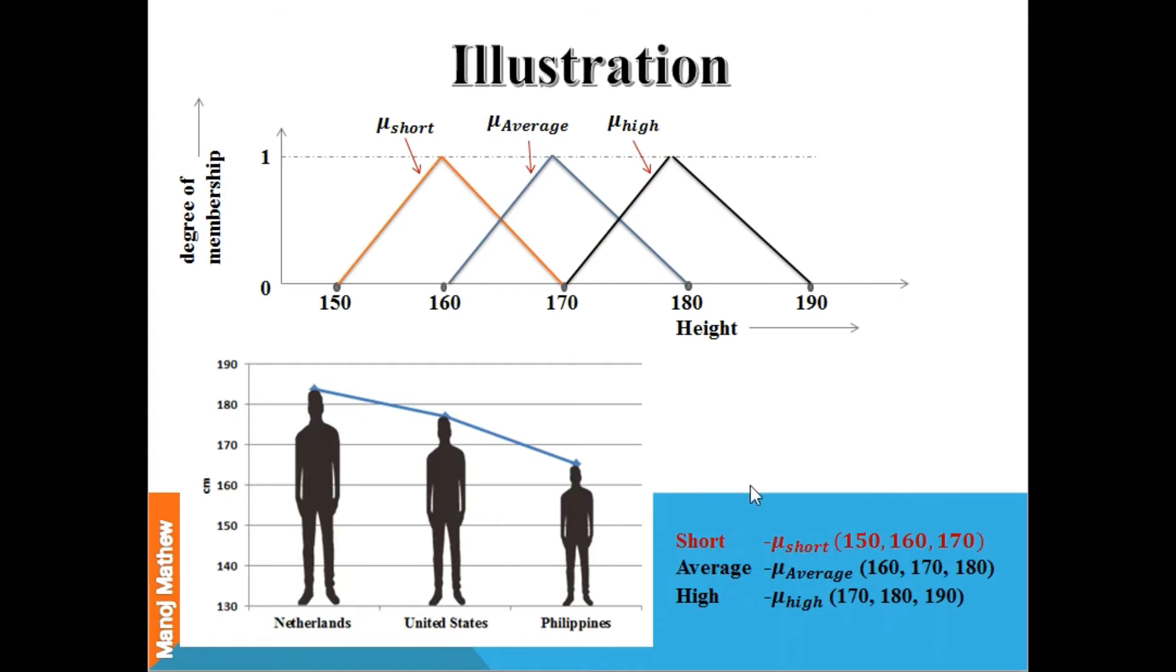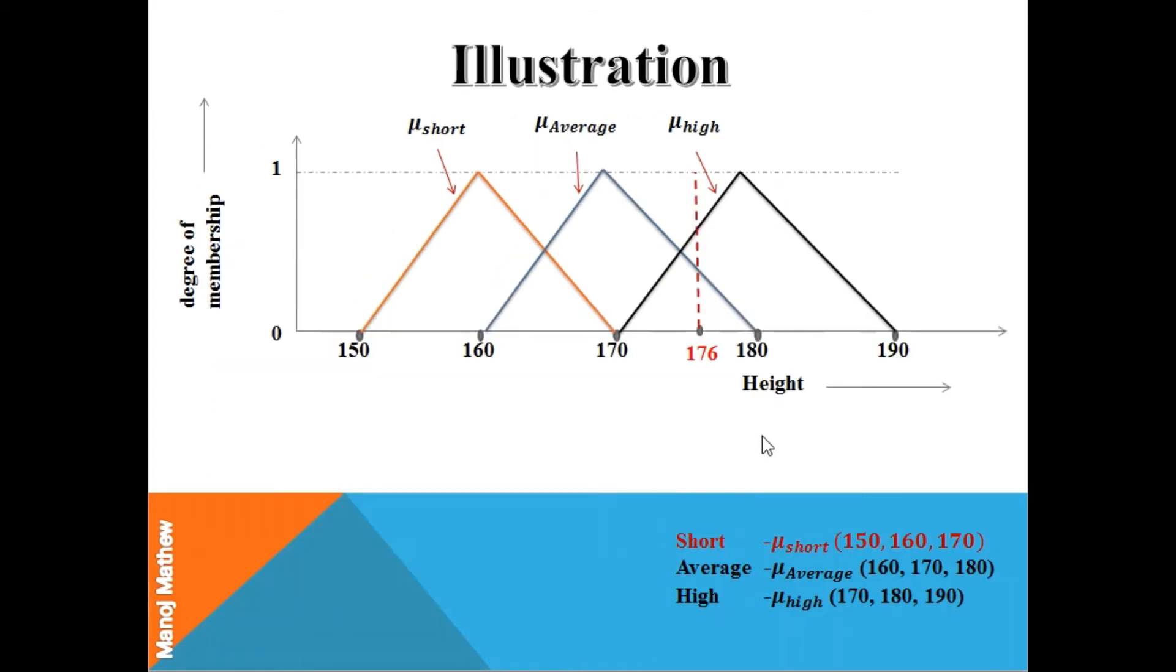Here we can see that the value 176 has two linguistic terms associated with it. 176 will be 40% average. We can see that the vertical line from 176 intersects μ-average, which is the membership function of average, at 0.4 degree of membership. When converted to percentage, this is 40%, so 176 is 40% average.